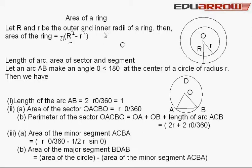Length of arc, area of sector and segment: Let arc AB be of an angle θ, where θ is 0 degree to 180 degrees.